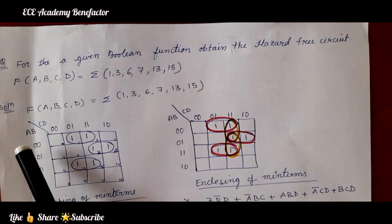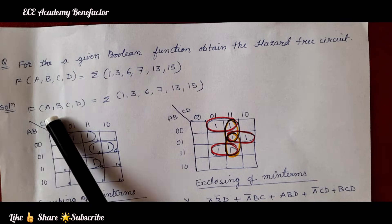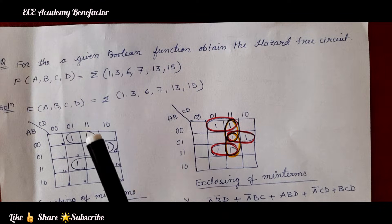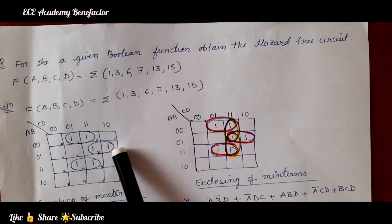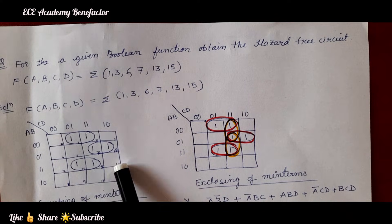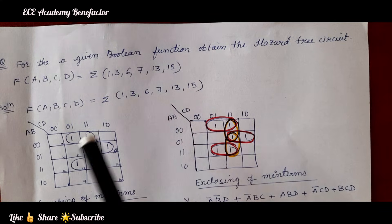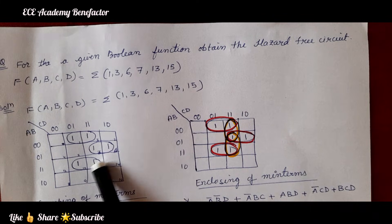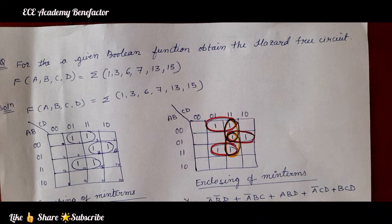The variables we have to follow the same pattern A, B, C, D. Here 00, 01, 11, 10 — 00, 01, 11, 10. The cell numbering is: 0, 1, 2, 3, 4, 5, 6, 7, 8, 9, 10, 11, 12, 13, 14, 15. If you know the cell numbering you can simply fill the minterms directly. So minterms 1, 3, 6, 7, 13, 15 are occupied in this K-map by 1. We have filled the 1s and then done the grouping.